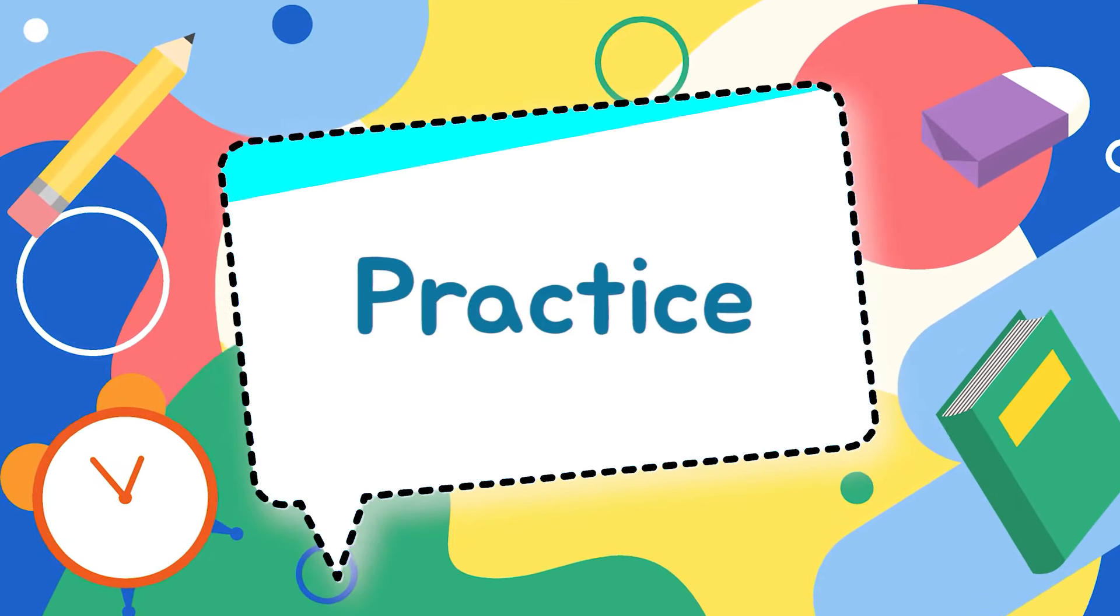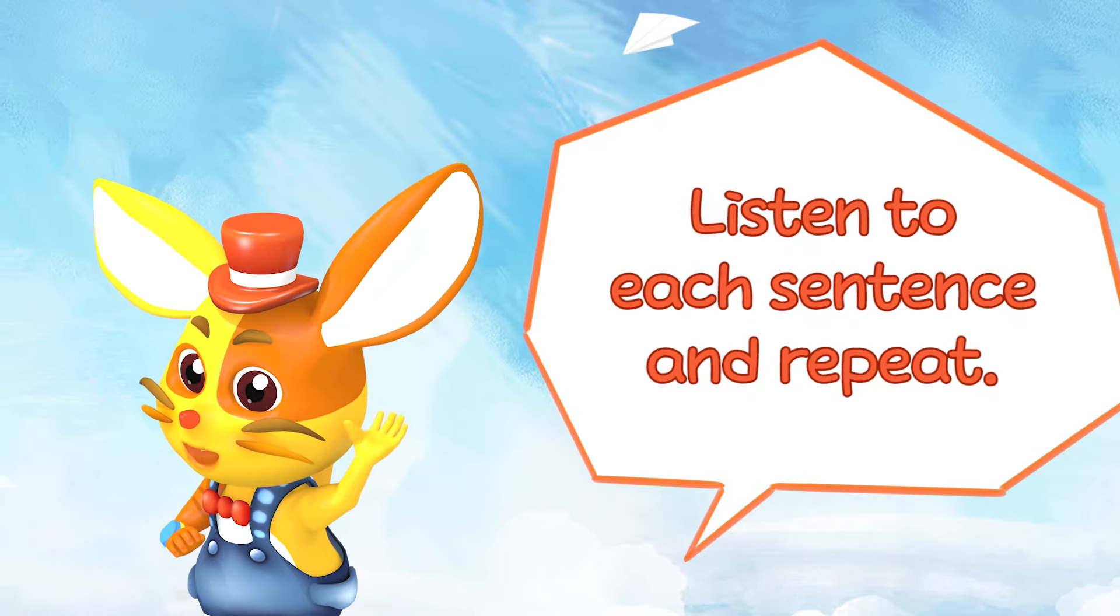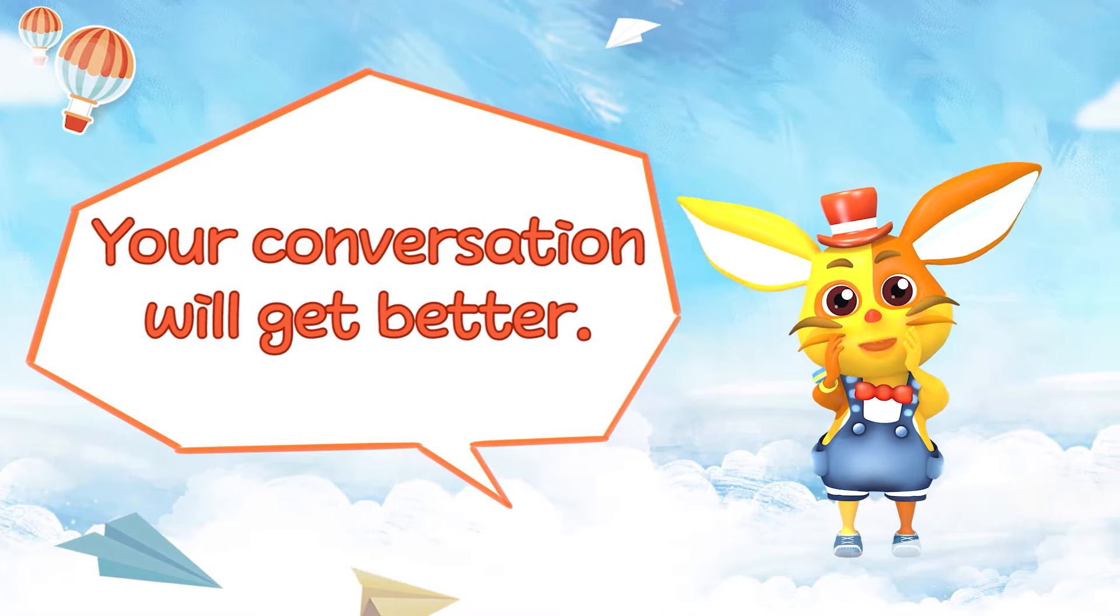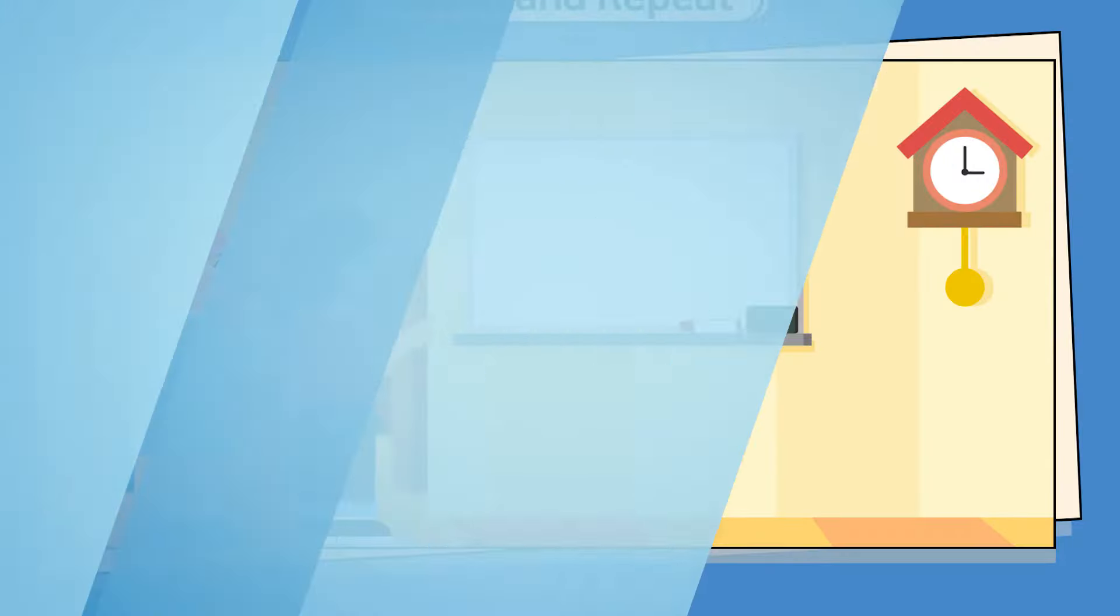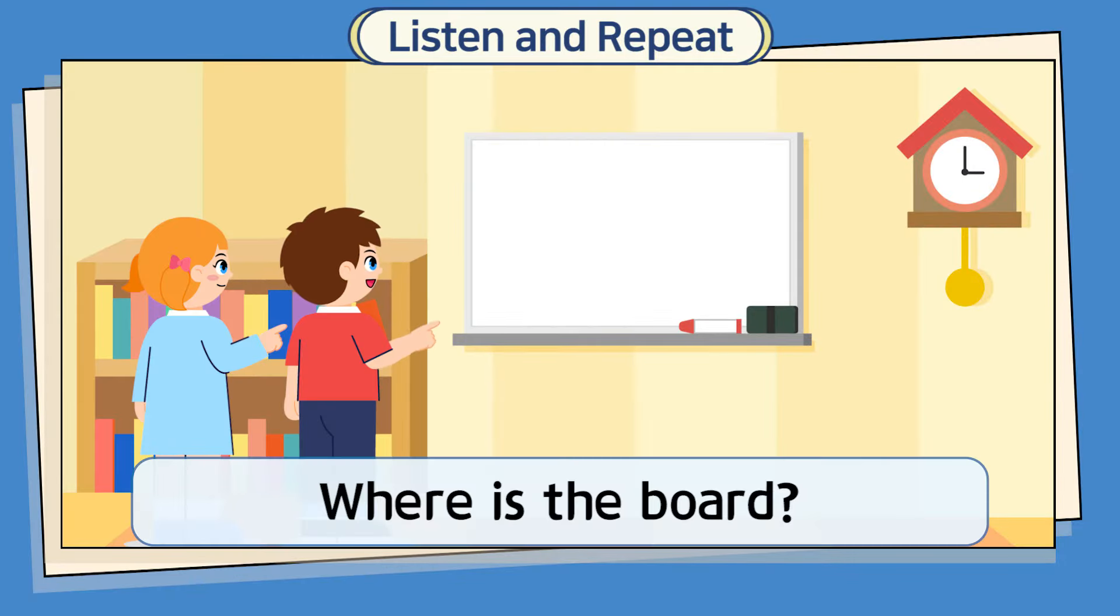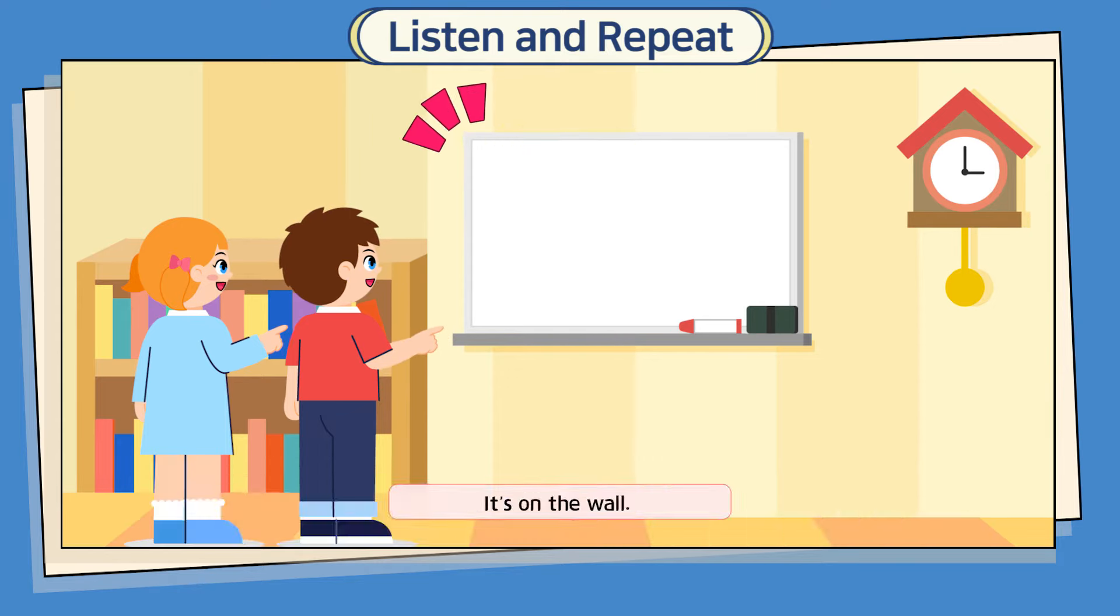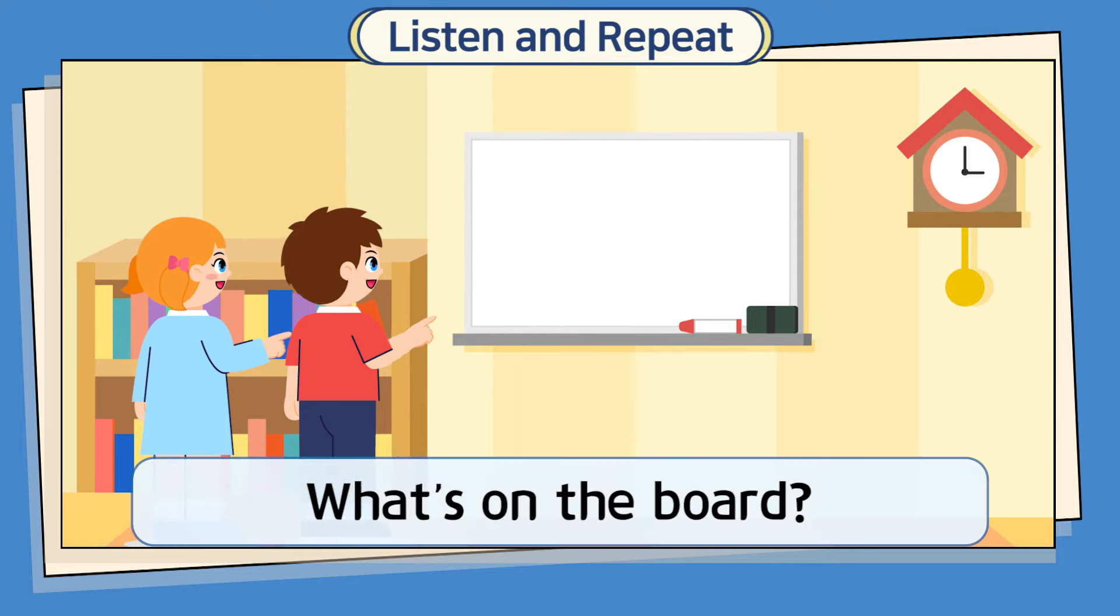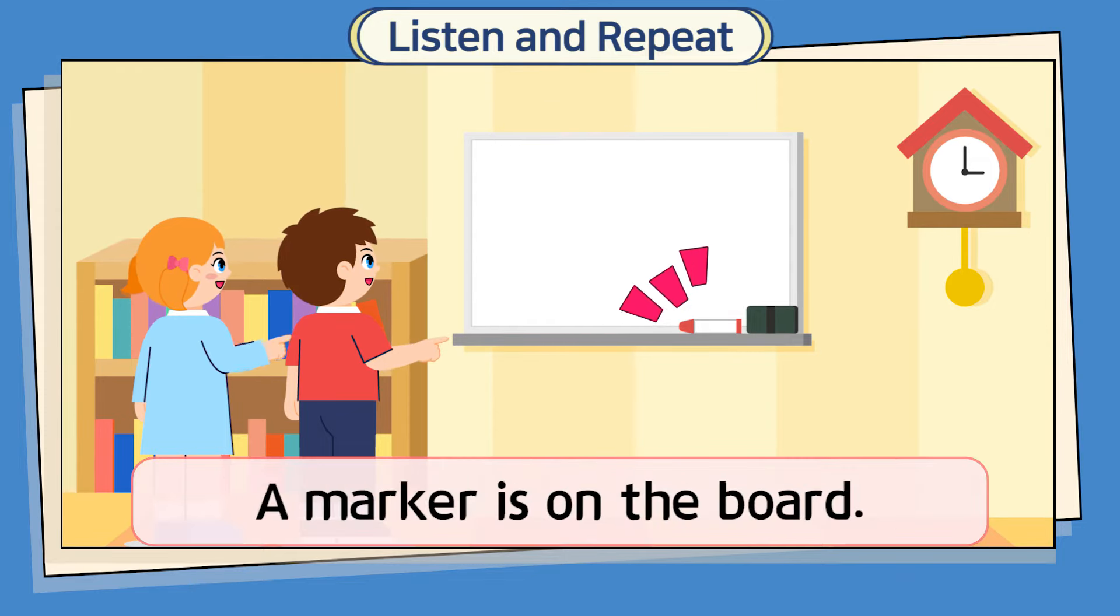Practice. Listen to each sentence and repeat. Your conversation will get better. Where is the board? It's on the wall. What's on the board? A marker is on the board.